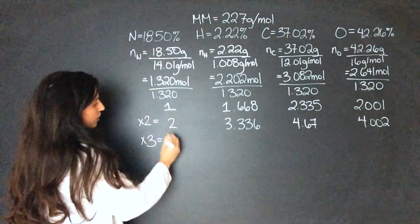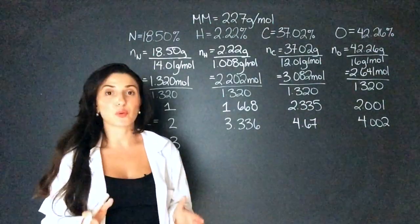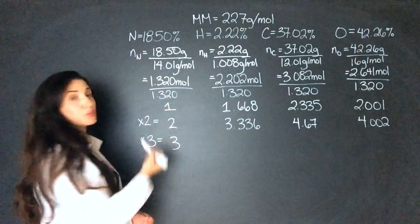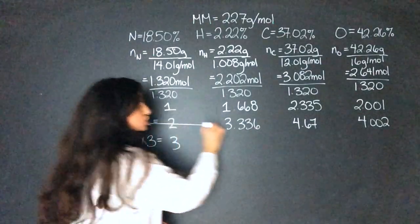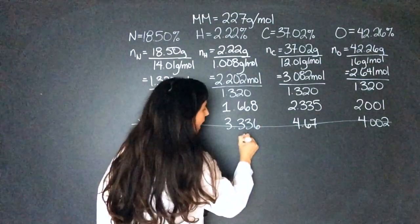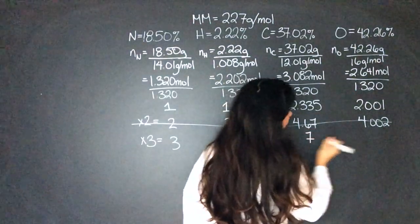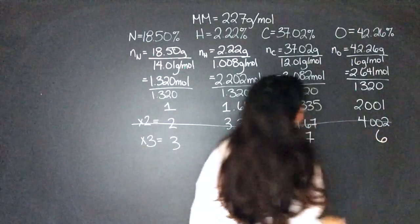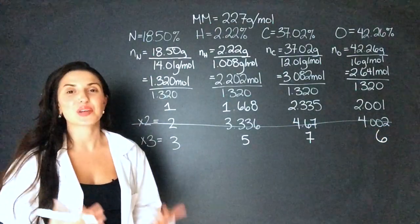So now we'll get 3. And remember, when you're multiplying, you're multiplying the original. So pretend I scratched that out. It never even happened. And then we get 5, 7, and 6. These are whole numbers and we can use this.